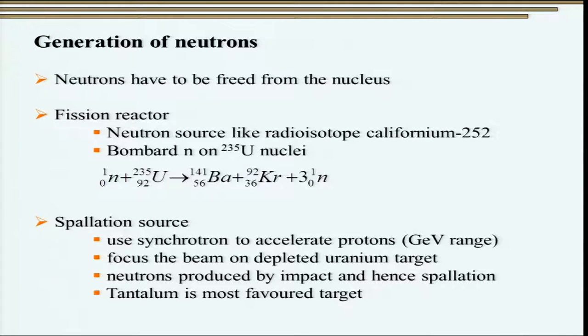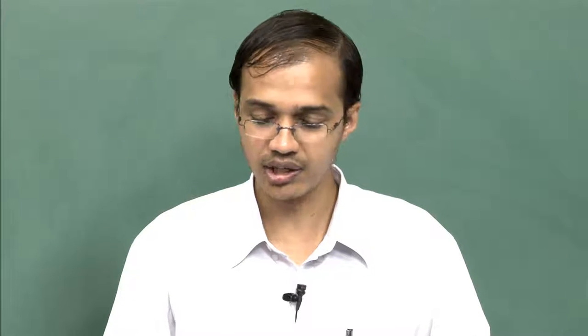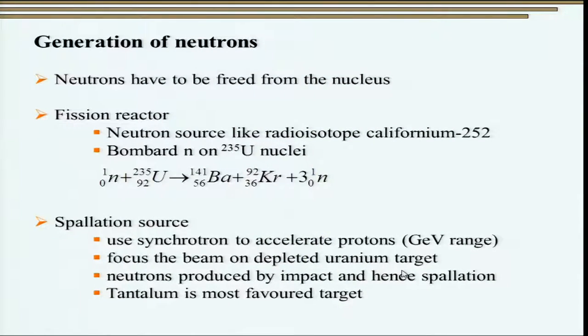A fission reactor can also be used for producing nuclear fuel, so in most countries it is generally not used for academic activities. Spallation sources are more appropriate and commonly used. However, one of the biggest problems with the spallation source is that it produces a lot of radioactive waste from the target material — once the accelerated protons hit the uranium or tantalum target and release neutrons, the leftover material is highly radioactive. This is one of the drawbacks of the spallation source.